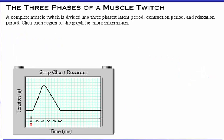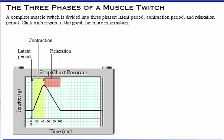A complete muscle twitch is divided into three phases: latent period, contraction period, and relaxation period. The actual time periods for the three phases shown here may vary with the specific muscle being studied. Click each region of the graph for more information.